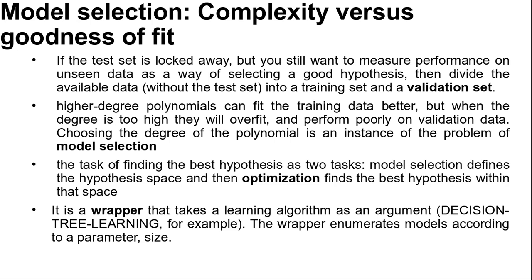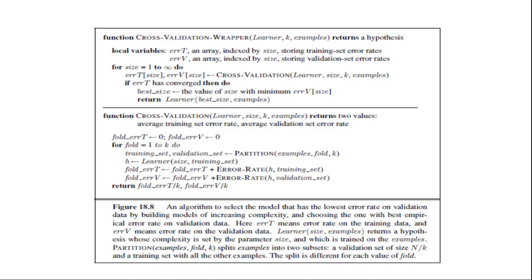An algorithm to perform model selection and optimization is the cross-validation wrapper. It is a wrapper that takes a learning algorithm as an argument — for example, decision tree learning — and enumerates models according to a parameter size. For each size, it uses cross-validation on the learner to compute the average error rate on the training and test sets. We start with the smallest, simplest model and iterate, considering more complex models at each step, until the model starts to overfit.